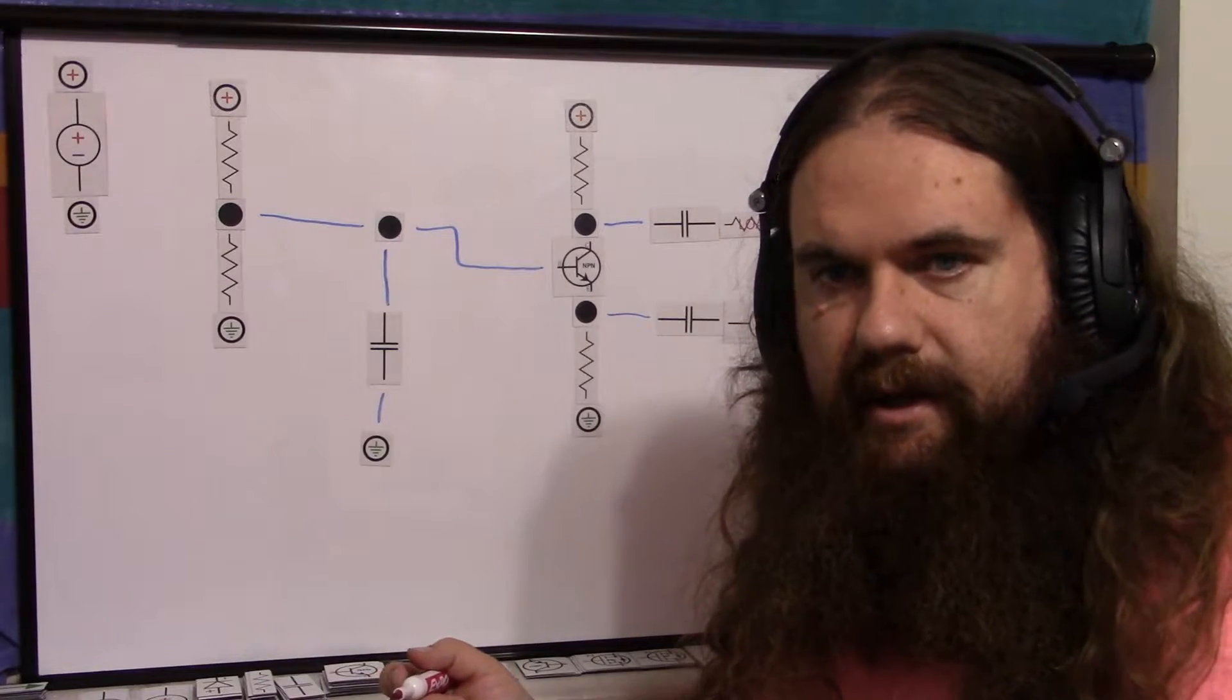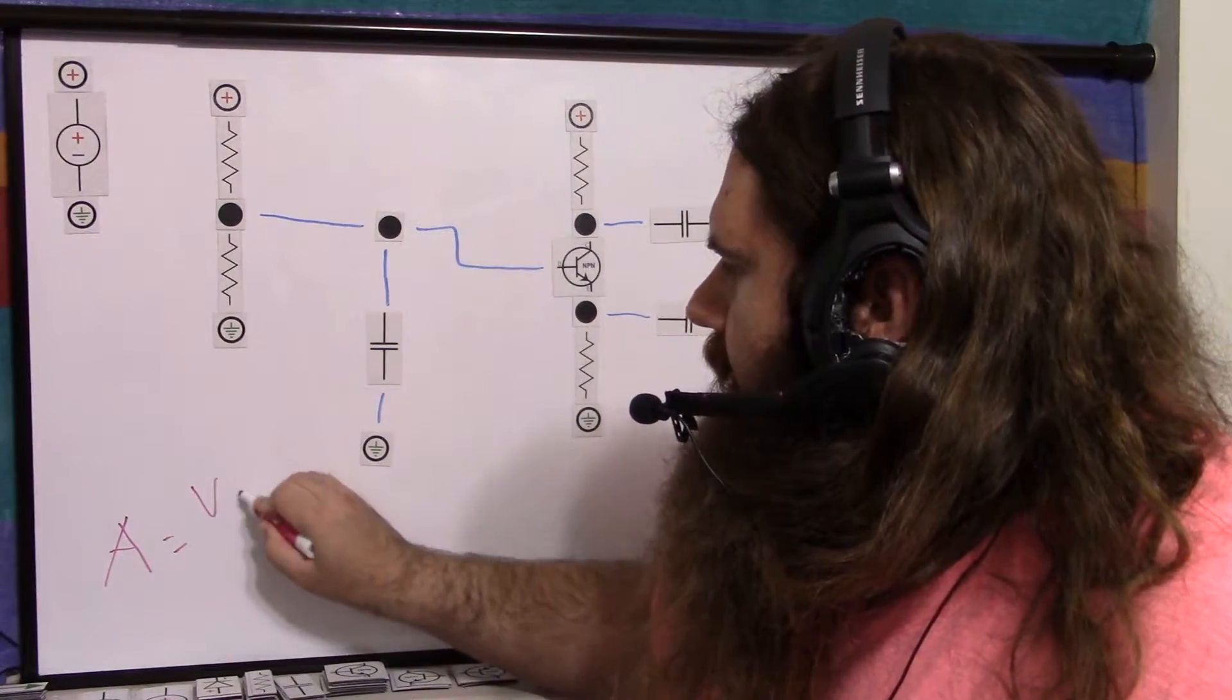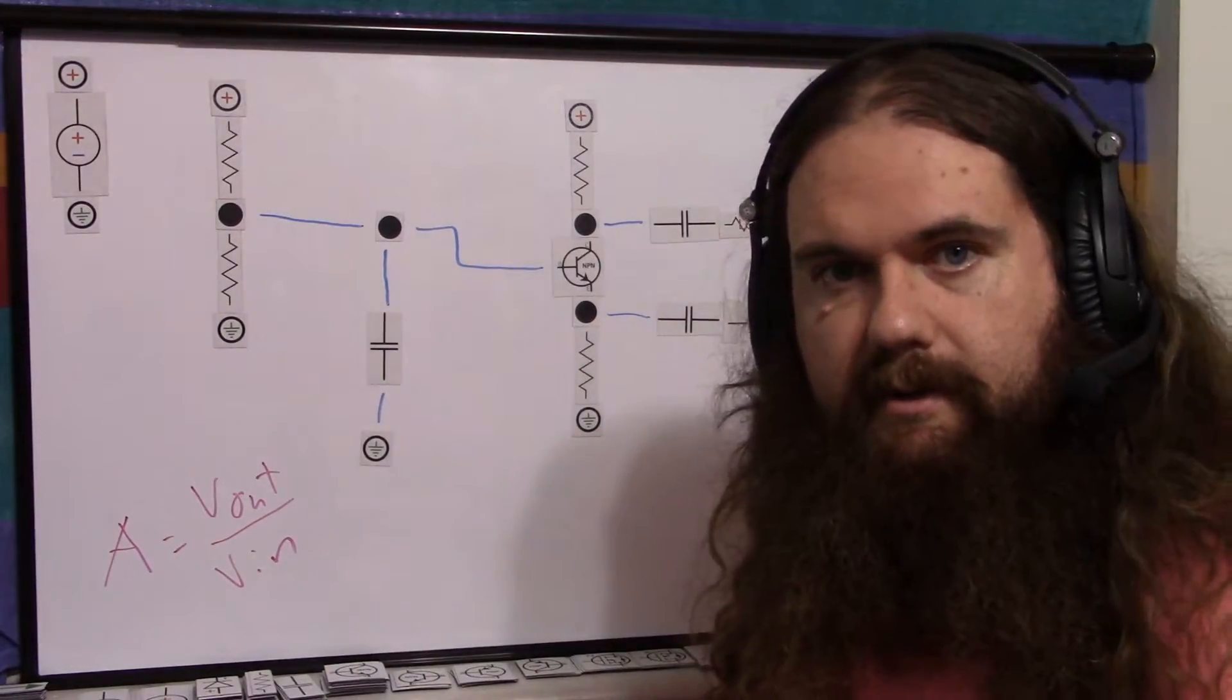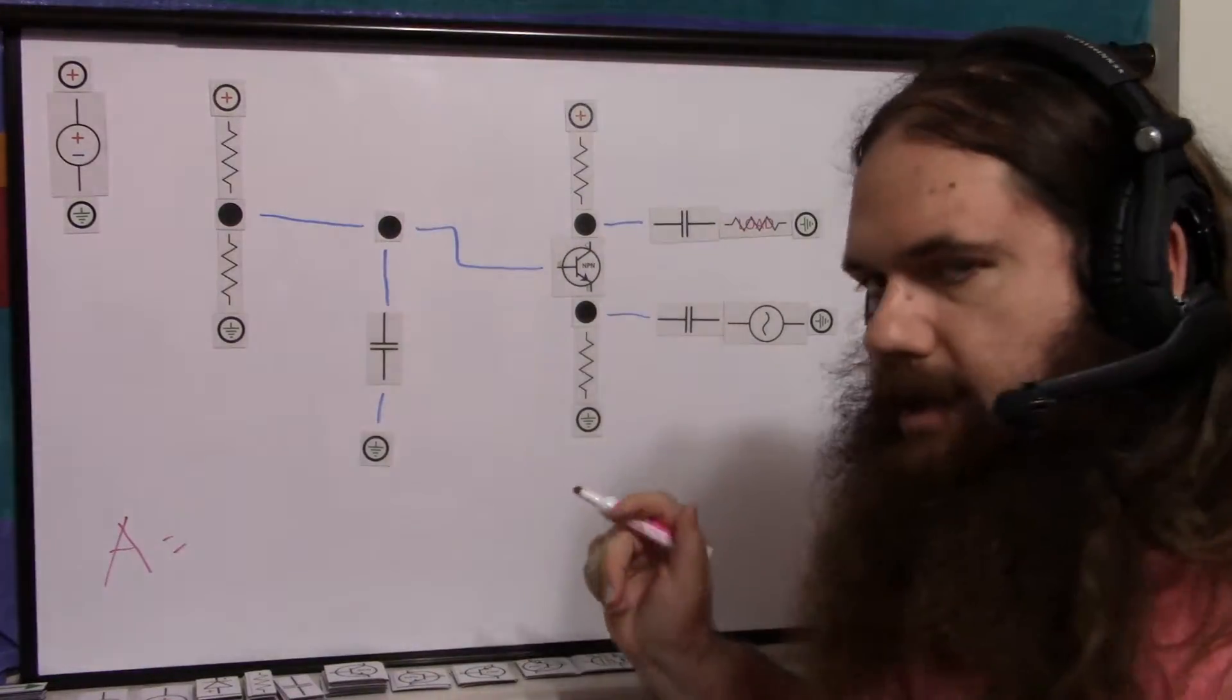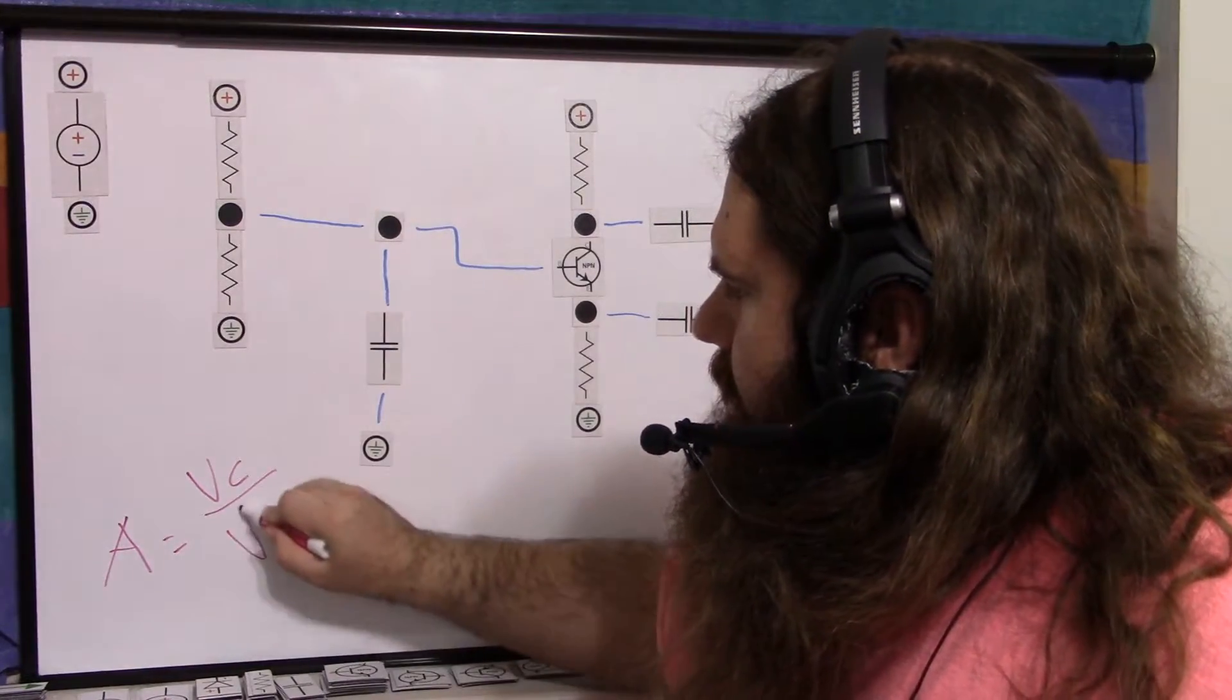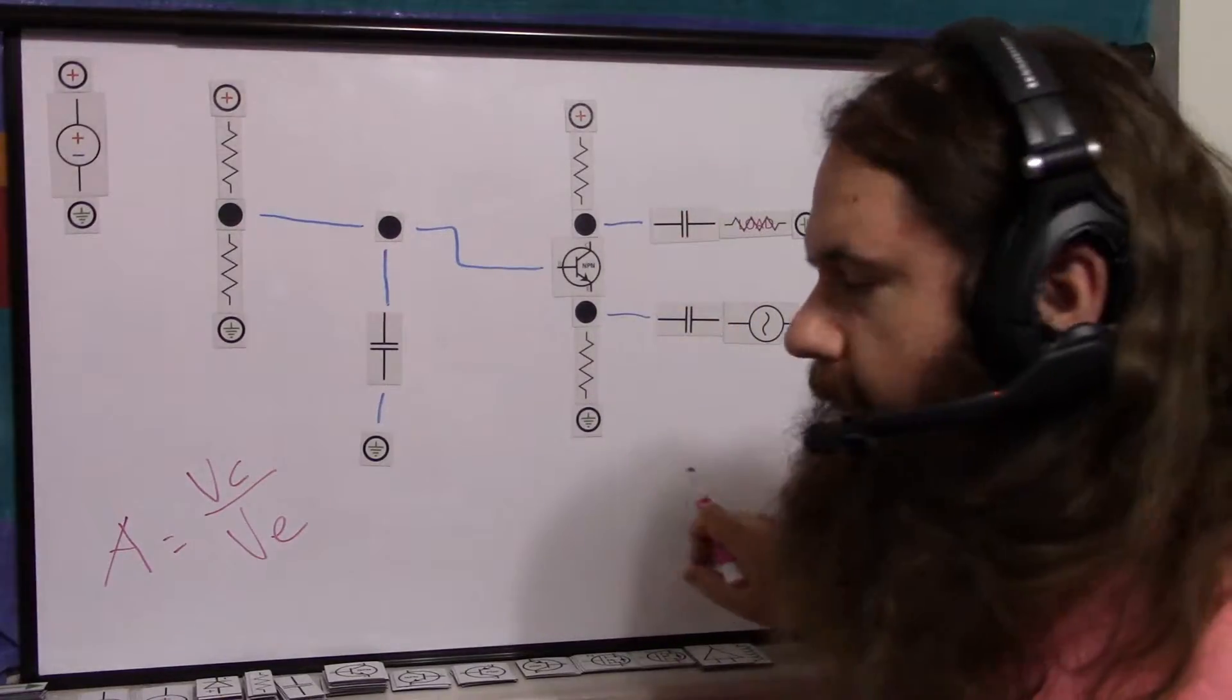So what is the gain here? Well, if we say A is the gain, it's Vout over Vin. That's just what gain is. We want to see how much the output voltage goes up compared to the input. And since we're connected to the collector and the emitter, it's the voltage across the collector, voltage across the emitter, or at the collector and emitter, really.